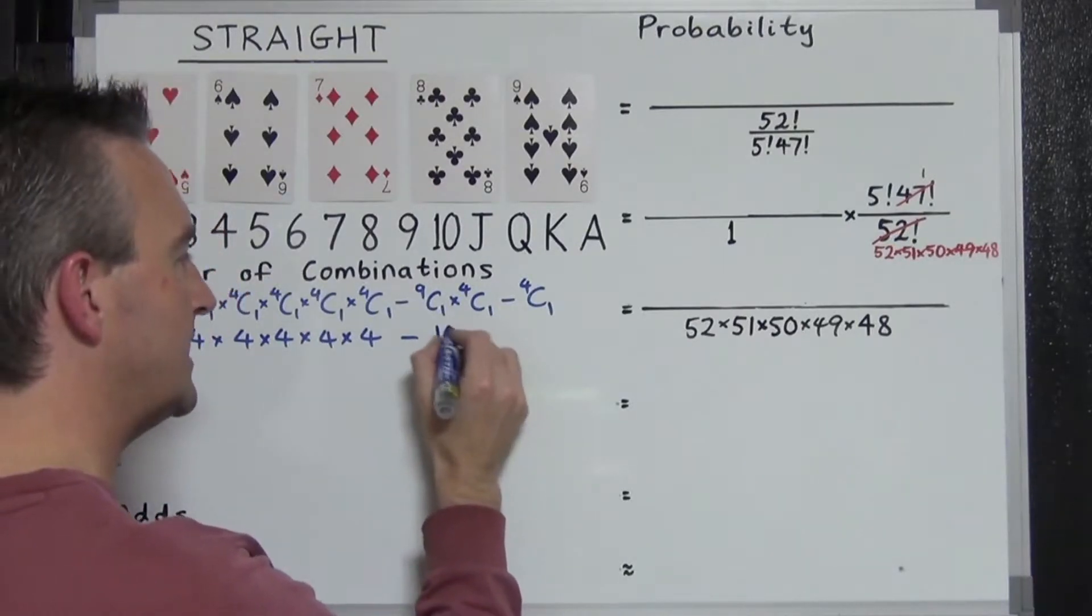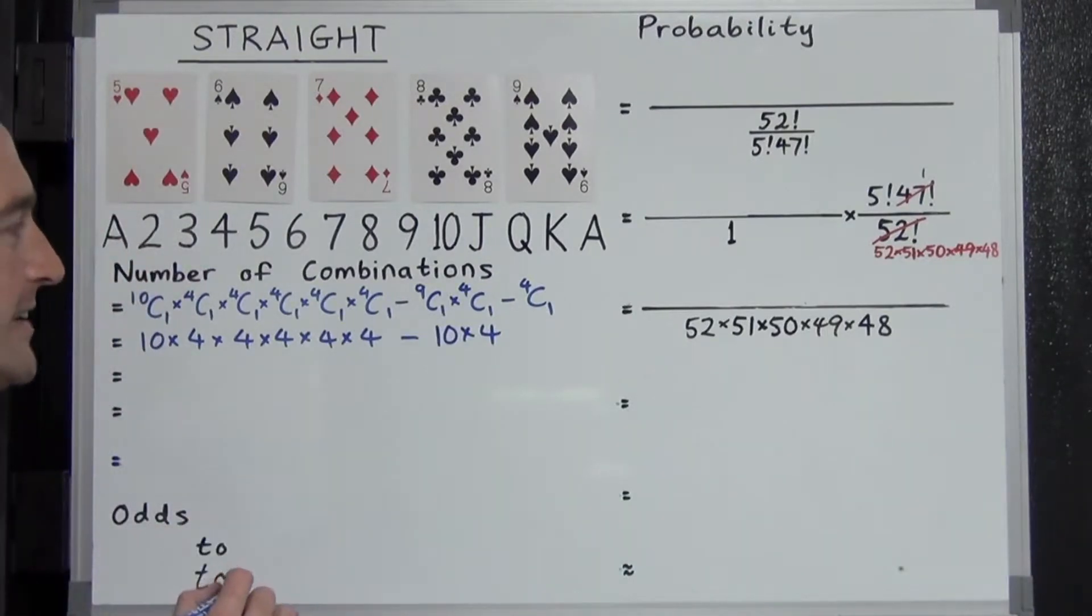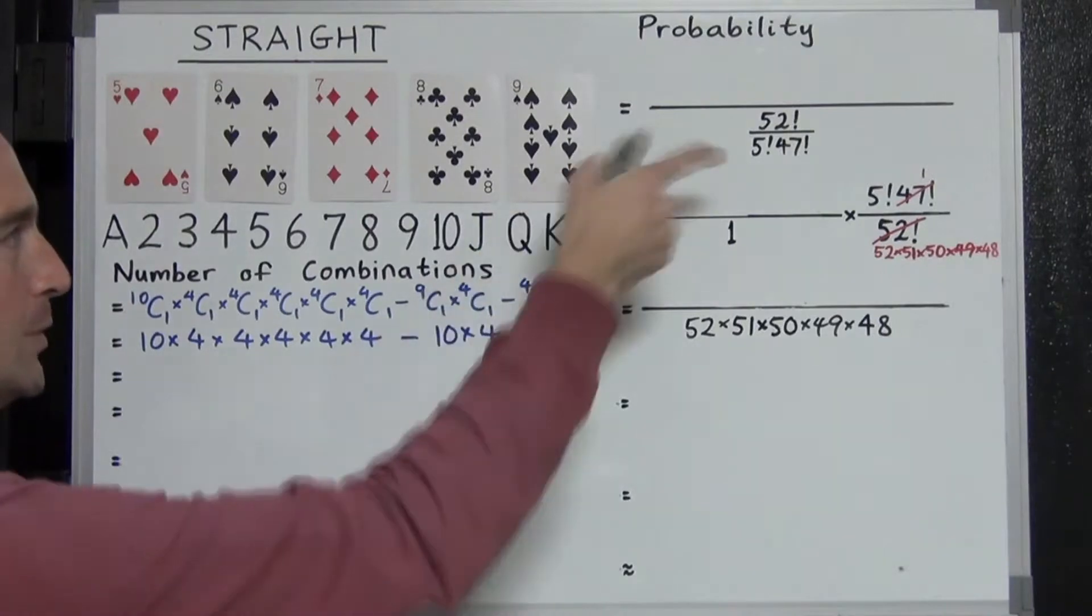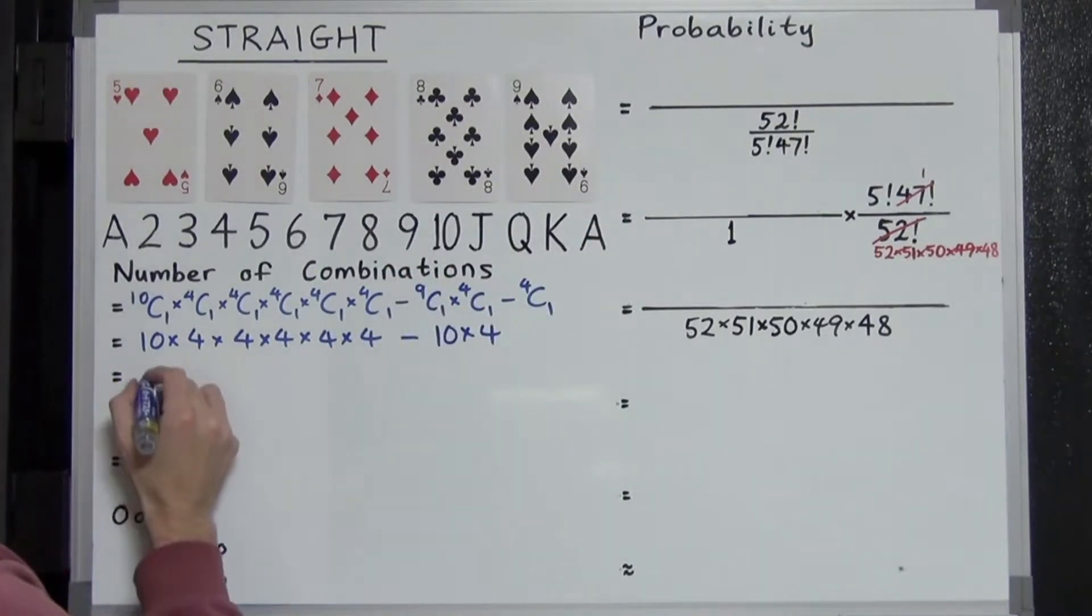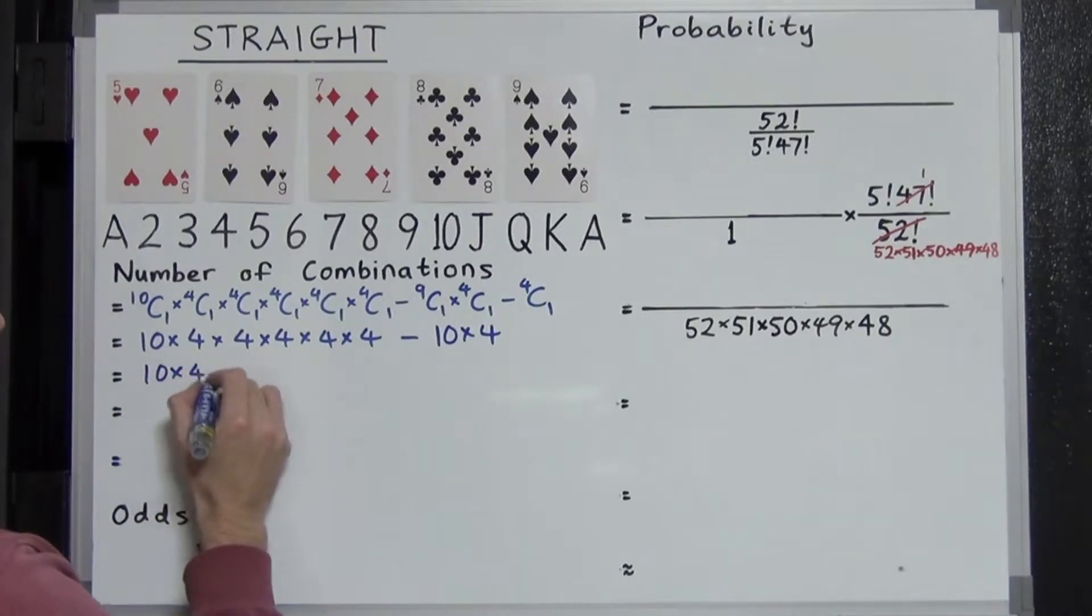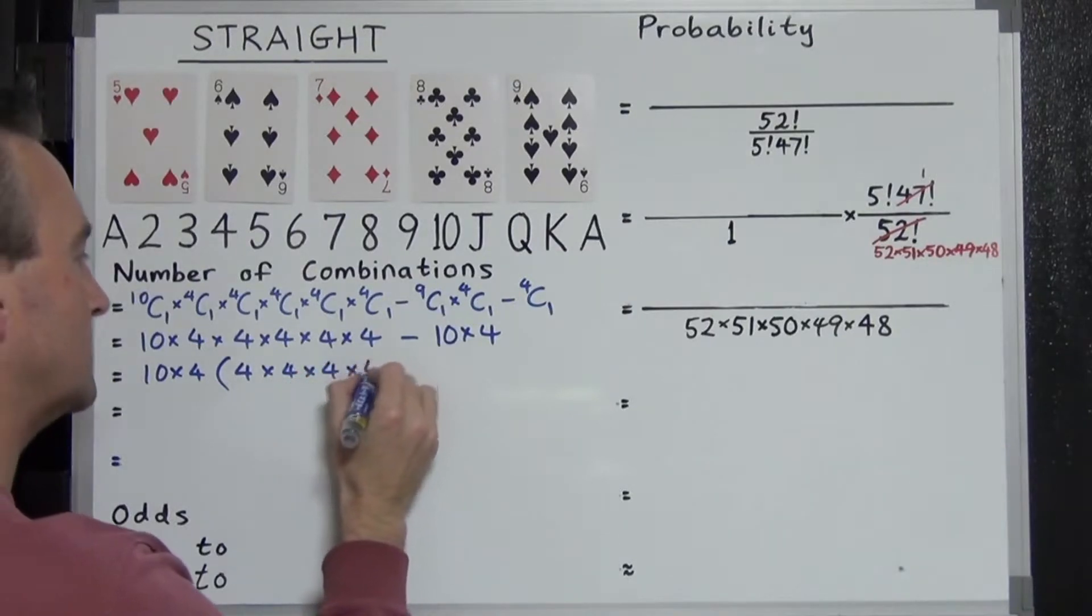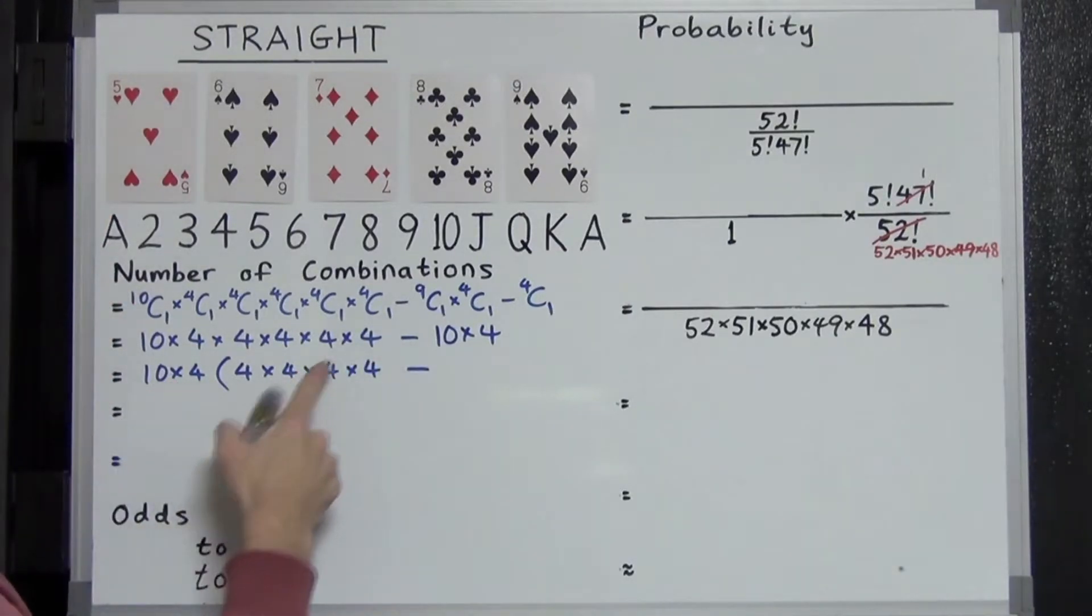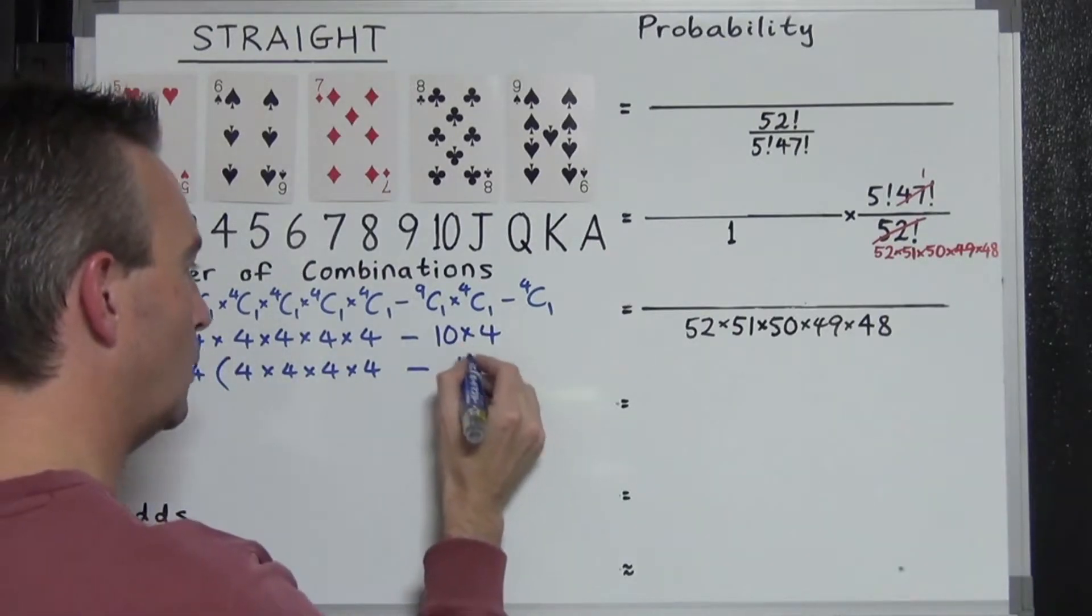So minus 36 minus 4 is going to just become minus 40. But instead of writing 40, I'm going to write 10 times 4. So I'm not going to do this on the calculator yet. I want to get a nice, easy expression of factors so we can cancel later. So what I'm going to do now is factor out 10 times 4. And then I'm going to open a set of brackets. And what's going to be inside? 4 times 4 times 4 times 4 minus. This times what gives this? That's just going to be 1.